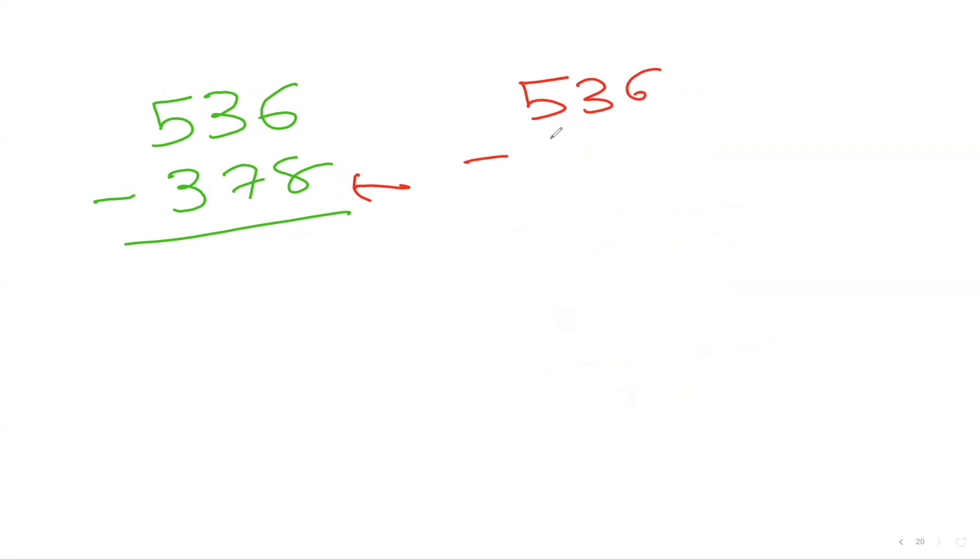I was supposed to minus 378 but I minus 400. How much extra did I minus? 400 minus 378 is 22, so I minus 22 extra, so I add them up to get 158 so easily. If you practice a few questions, you'll realize you can do this literally in one second.